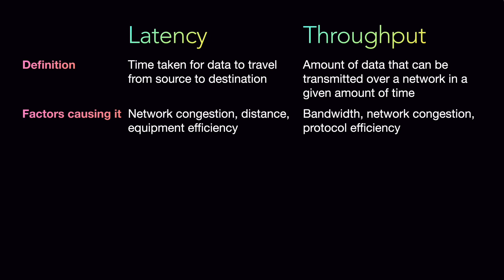Factors causing it: for latency, obviously network congestion, equipment efficiency, the distance, the amount of distance that it has to travel. For throughput it is the bandwidth, like we saw the width, the bandwidth of the channel, network congestion again, and also protocol efficiency. Different protocols have different efficiencies of transmitting data, so that impacts throughput.